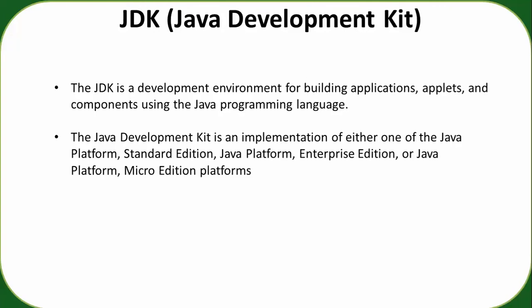The JDK is an implementation of one of the Java platforms: Standard Edition, Enterprise Edition, or Micro Edition. For standard programming or standalone applications, you can download Standard Edition. If you want to use Java for enterprise or mainframe computers, then you can use Enterprise Edition.